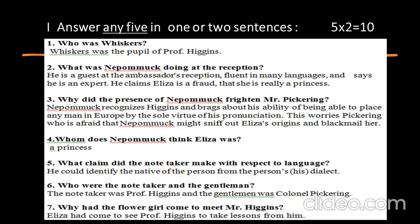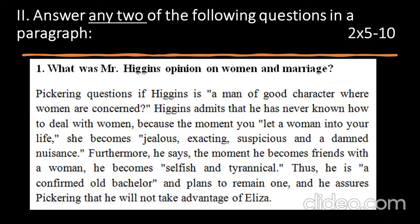Question 7: Why had the flower girl come to meet Mr. Higgins? Eliza had come to see Professor Higgins to take lessons from him. Now, Section 2, where you need to answer any 2 questions, each question is for 4 marks.